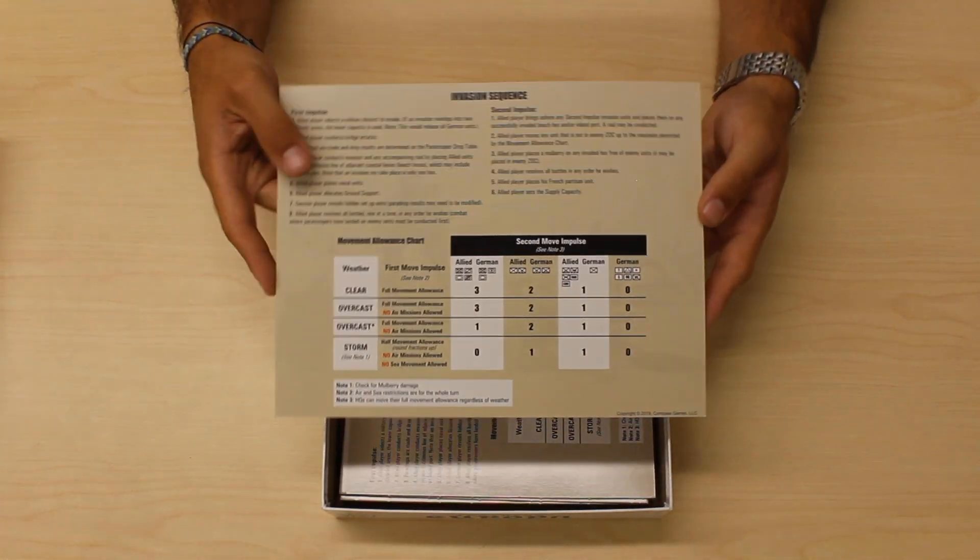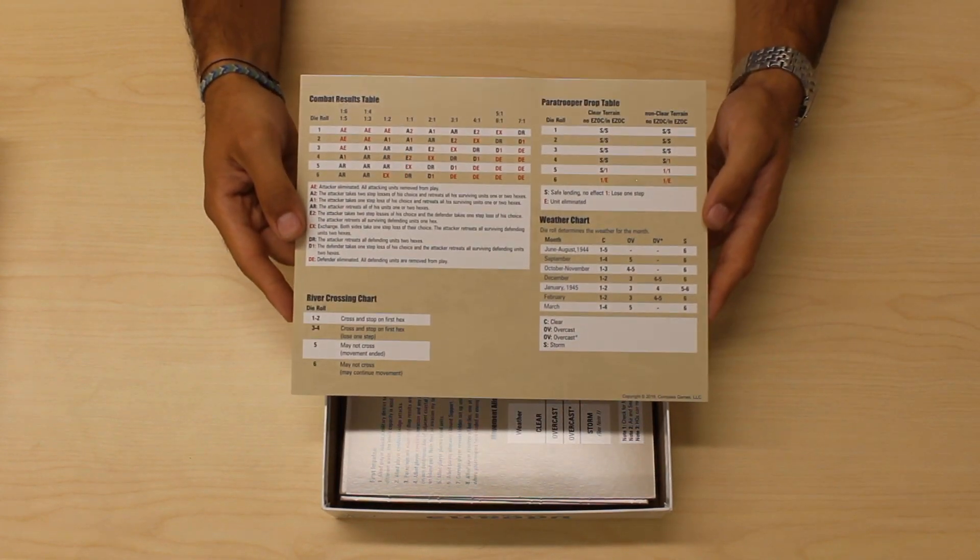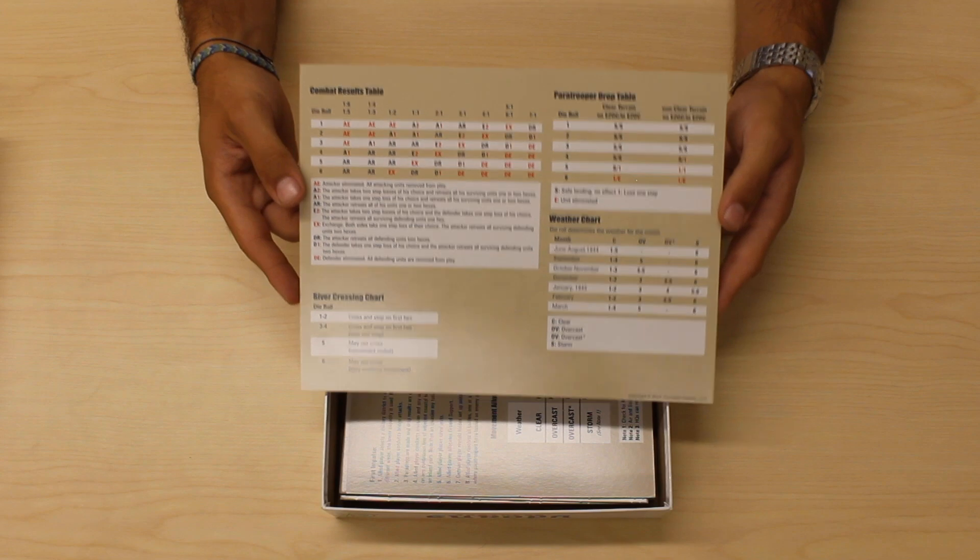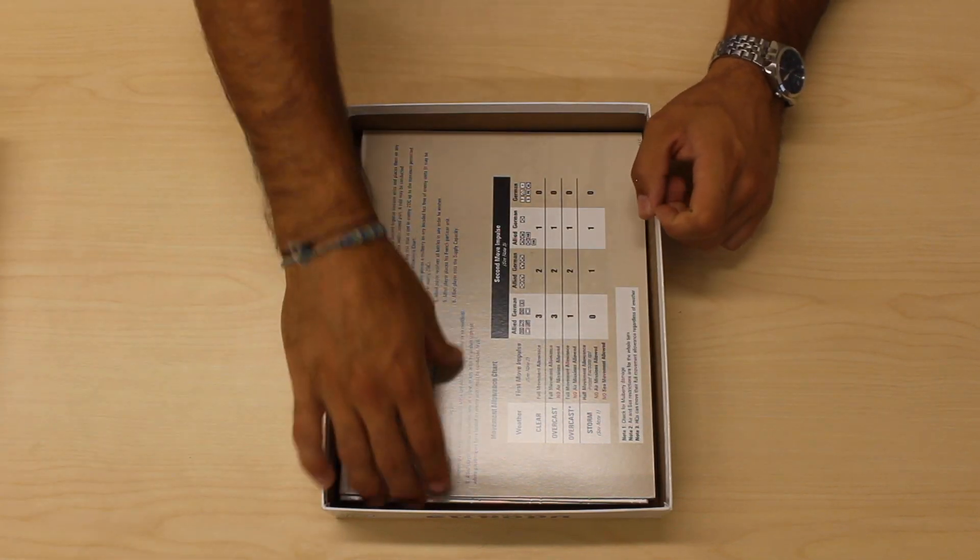We have the invasion sequence and combat results table, two-sided. Again, there's two copies of these, one for each player.